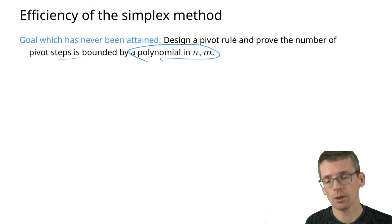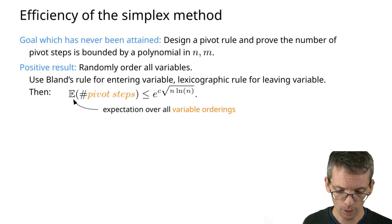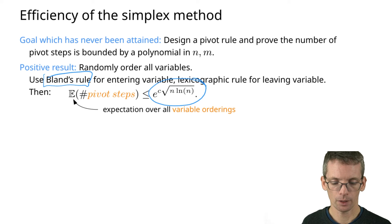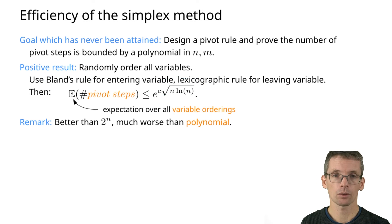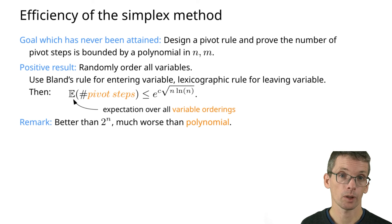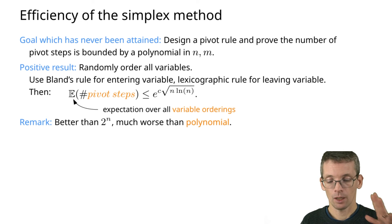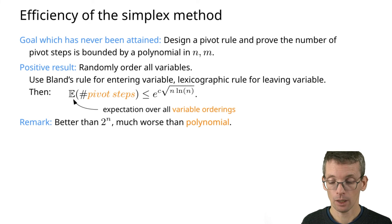There are some positive results. If we randomly order all variables and then use Bland's rule, the expected number of pivot steps is bounded by e to the square root of n log n. If it were simply exponential, we'd have e to the n instead. So this is much better than 2^n, but still much worse than polynomial. Keep in mind that in most cases the simplex method is much faster anyway, so this is not a reason to use Bland's rule — it's just a theoretical result.